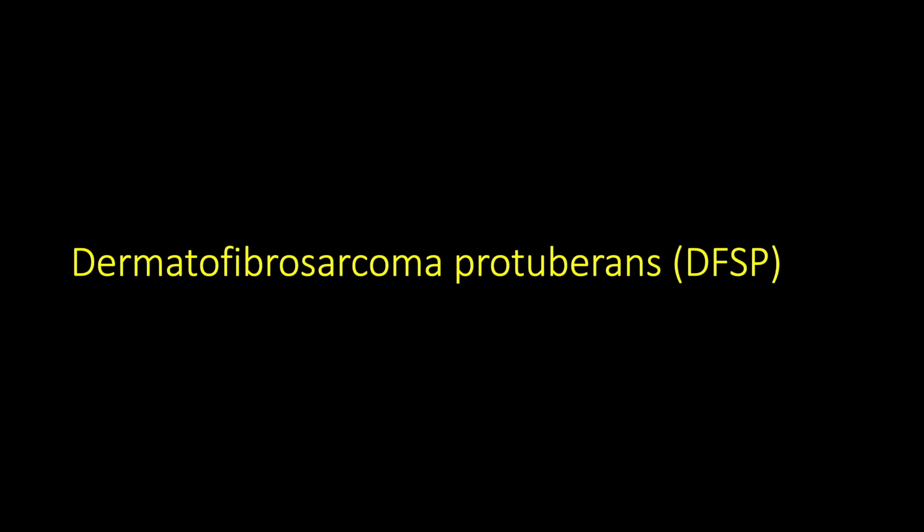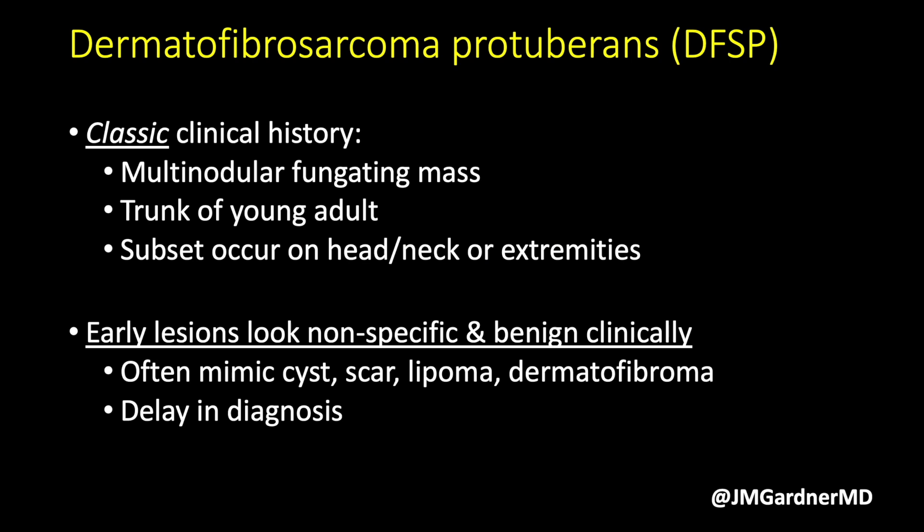One important spindle cell lesion for head and neck pathologists to know is DFSP. It's classically taught as a multi-nodular fungating mass on the trunk of young adults, but having worked with DFSP patient support groups for about seven years, I've met many patients with examples that don't fit this classic morphology. They can occasionally occur on the extremities, and on a relatively common basis they occur on the scalp — so it's really important for head and neck pathologists to know about DFSP and its prevalence at that site.